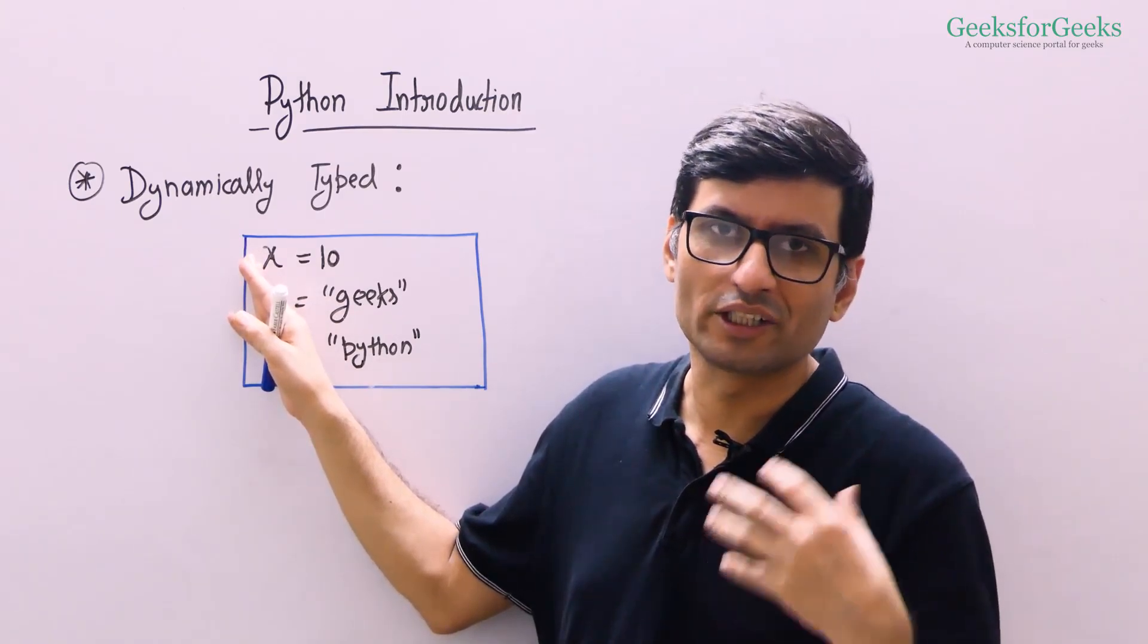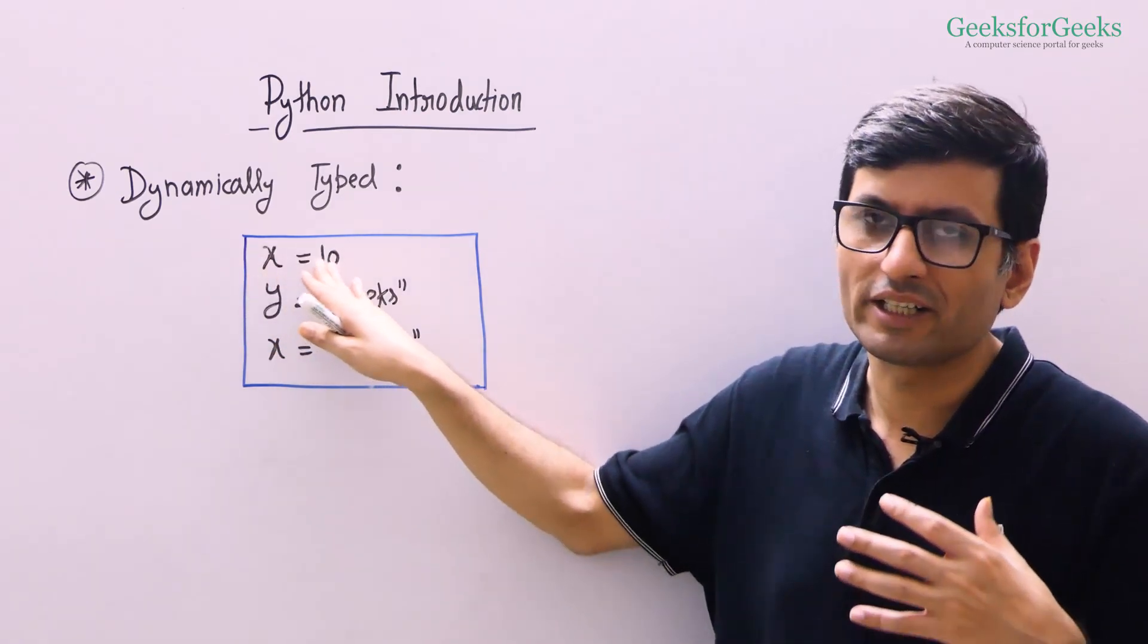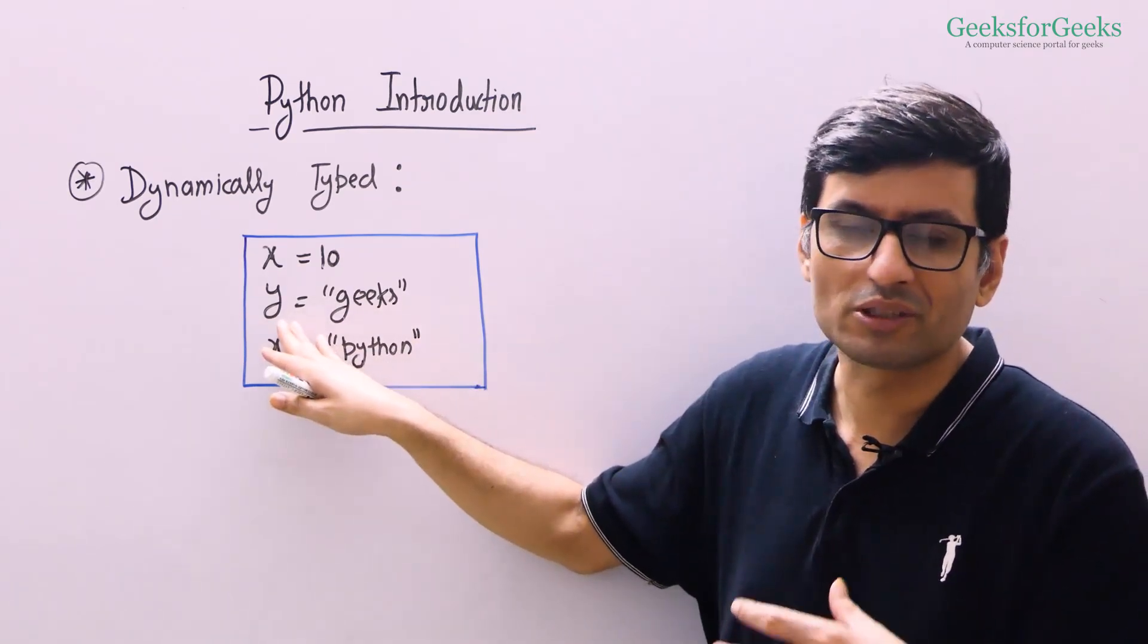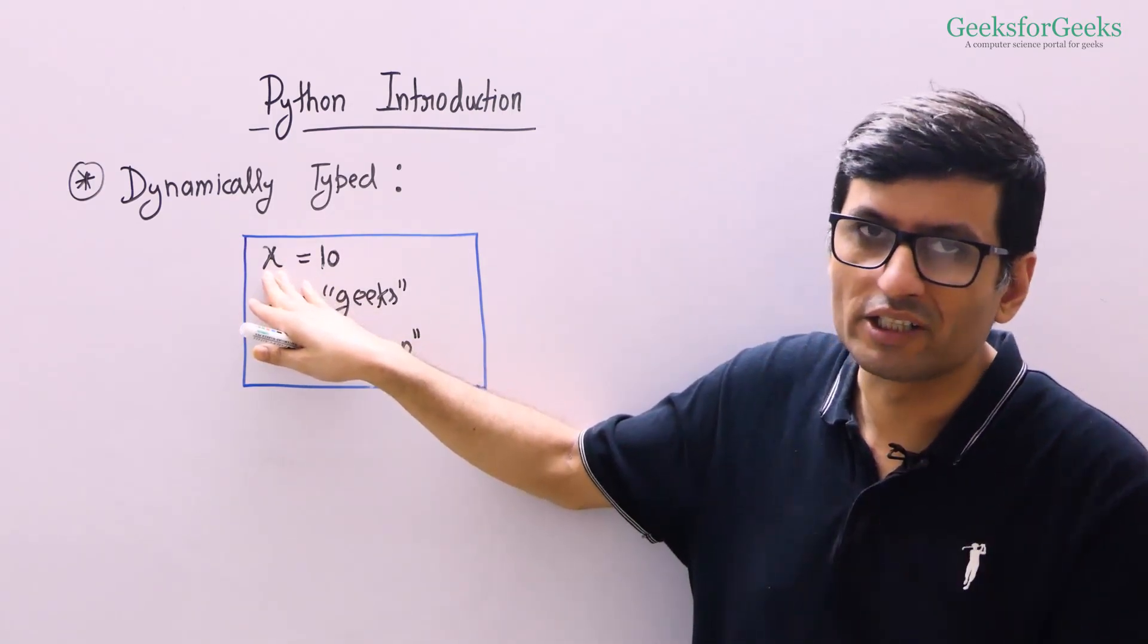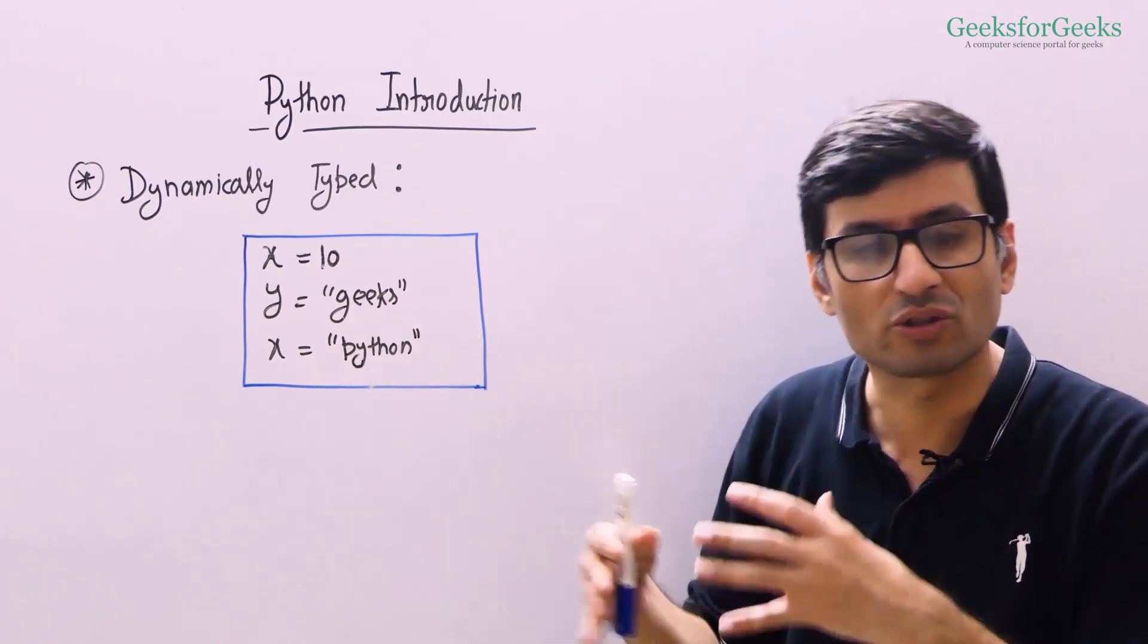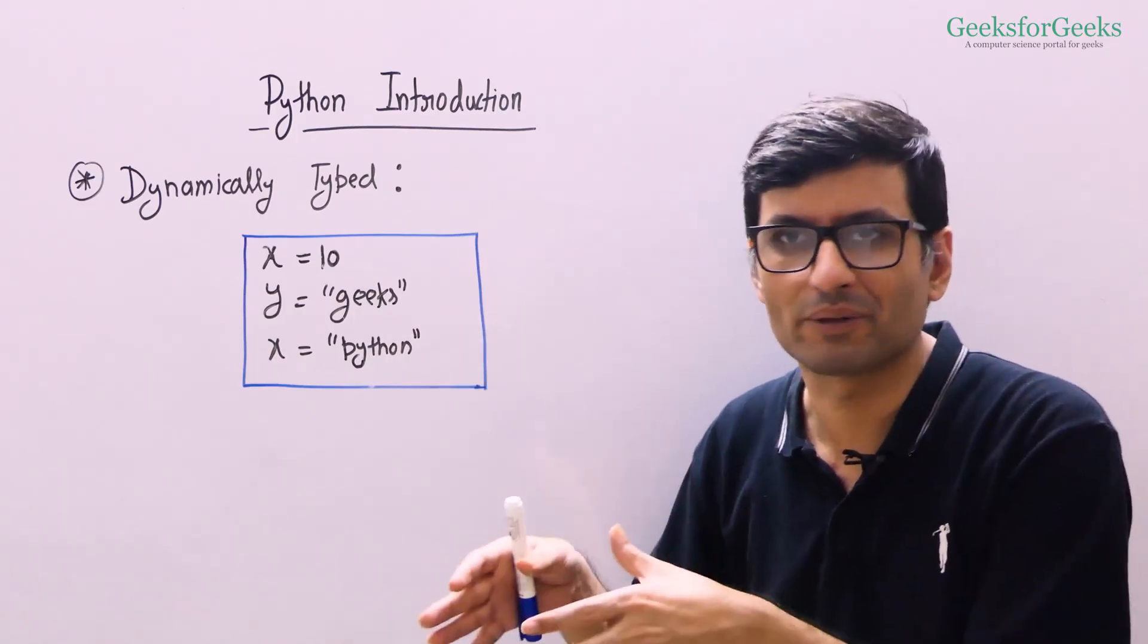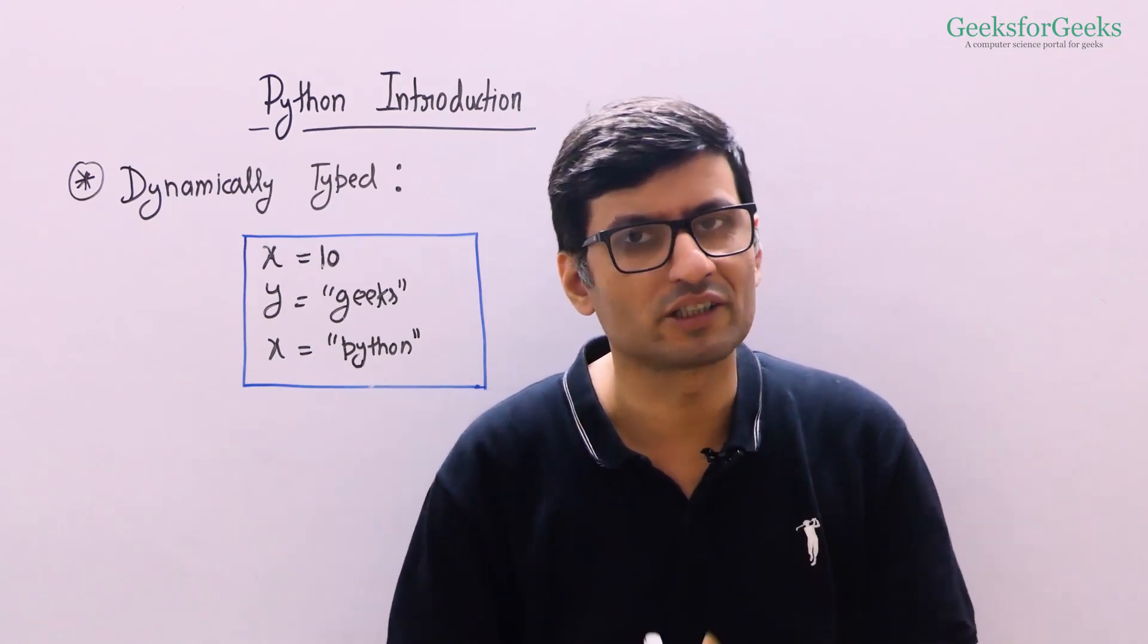As a programmer, I can simply write x = 10. Here another variable y which holds a string value—I don't have to specify that this is a string variable. A variable which was earlier holding an integer value can now later hold a string value. This is also allowed in Python. We are going to discuss Python variables and their syntaxes in detail in a separate track. Dynamically typed languages have their own advantages and disadvantages.